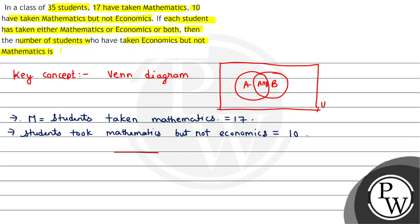First we create a Venn diagram. This is our Venn diagram, this is total students. This set represents the number of students who took mathematics, and this set represents students who took economics. So basically we have to find this region - students who took mathematics but not economics, which is only mathematics. Total mathematics is 17, and only mathematics is 10.